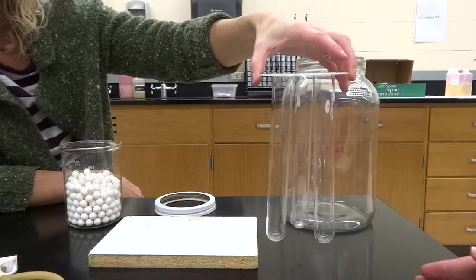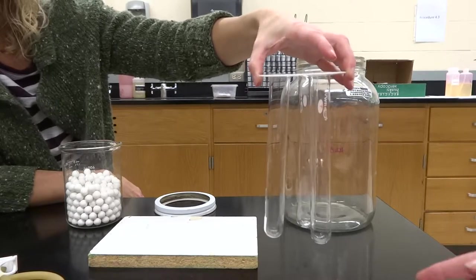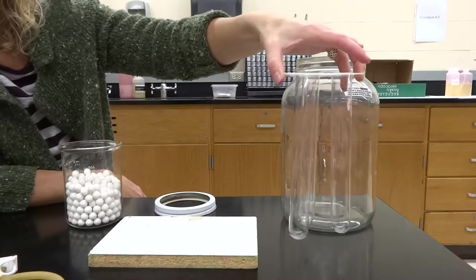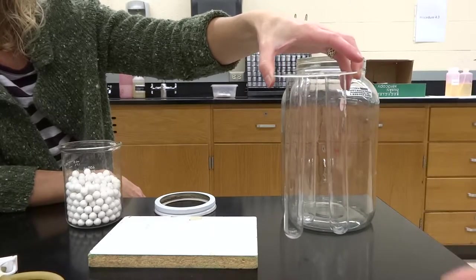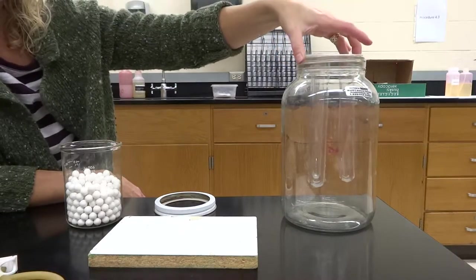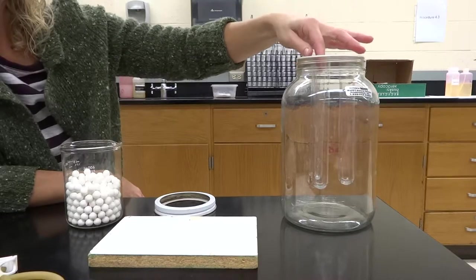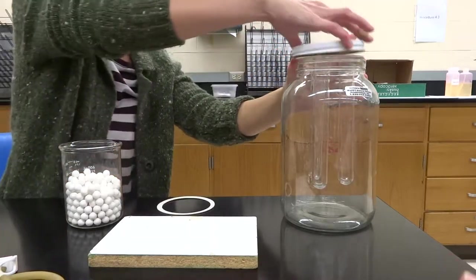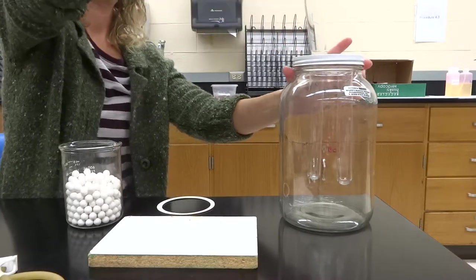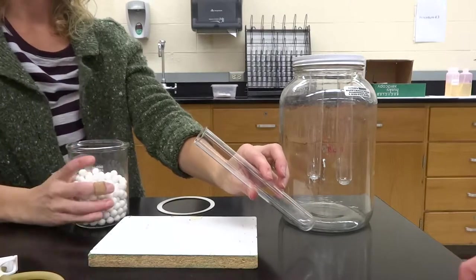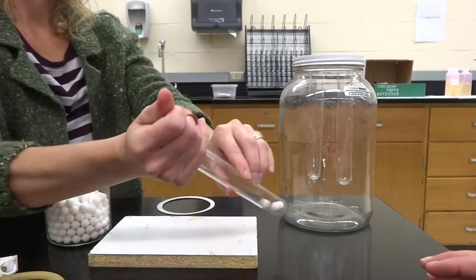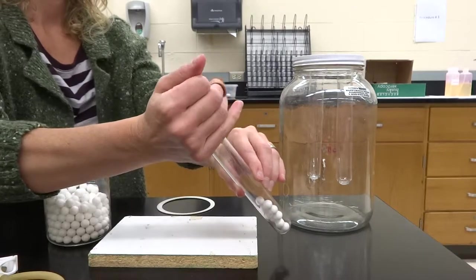Two of them are going to have peas in it. You should have about 30 peas in each of the two test tubes, and then the other one is going to be our control. That's where we're going to put beads in. You're going to put in the 30 peas, they should weigh about the same approximately. The third one is going to be filled with beads that should also weigh about the same as the peas. If you have 30 peas that are weighing about 50 grams, you should weigh out the beads to be about 50 grams.